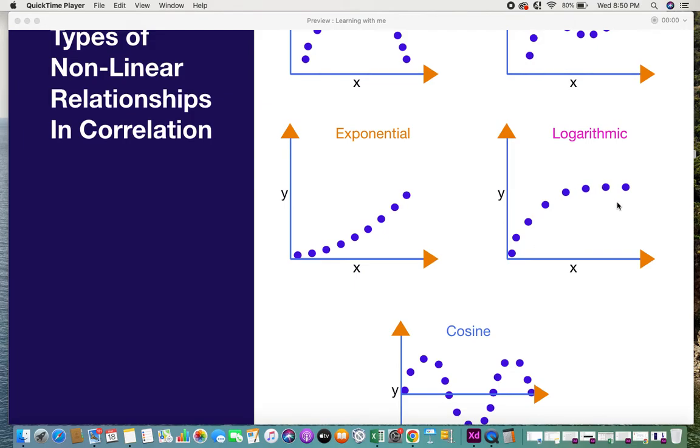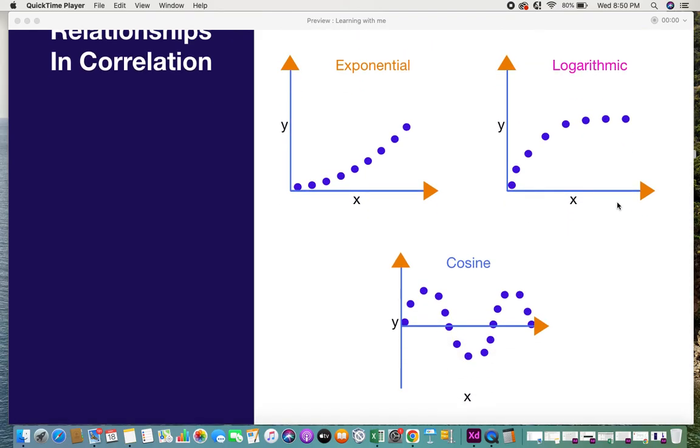At that point this type of a pattern formed is logarithmic. And the last one is cosine. The cosine relationship is a wave type of a relationship where for example you can see the sound wave pattern that forms a cosine wave pattern which we call as cosine relationships and nonlinear correlation.